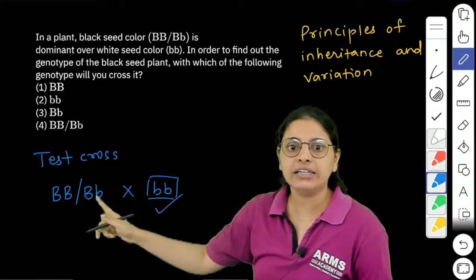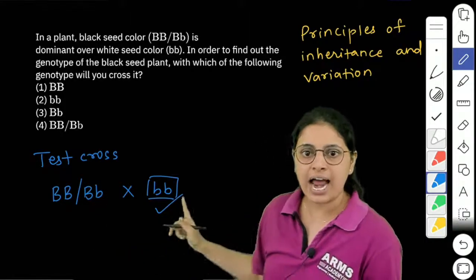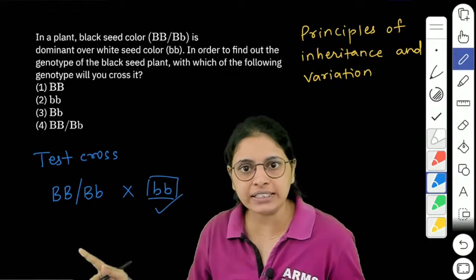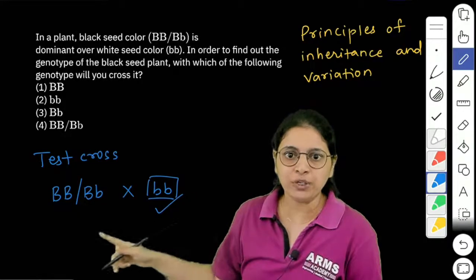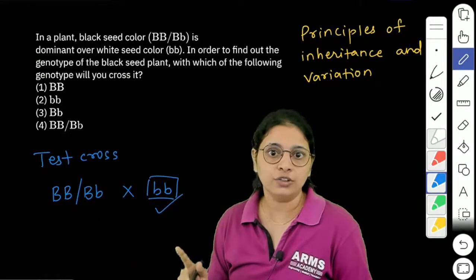But if the unknown genotype is heterozygous and you do the test cross, then 50% offspring will have black seed color and 50% will have white seed color. By doing this cross, you can find out the unknown genotype.